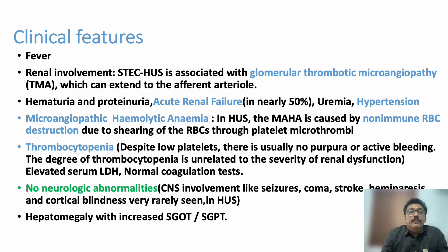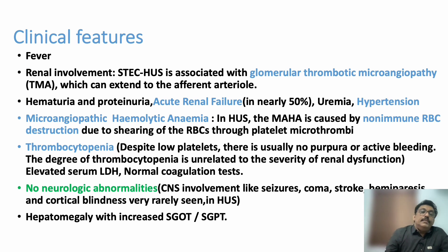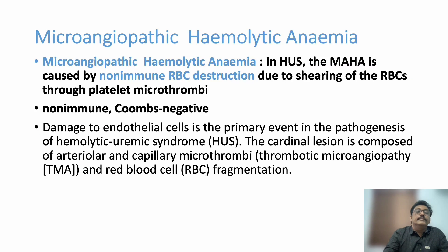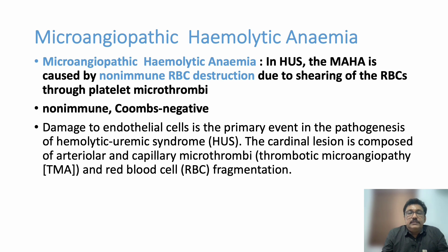Serum LDH and bilirubin can be elevated due to hemolytic anemia. Importantly, coagulation tests are normal in initial HUS. Neurological abnormalities are very rare in HUS but very common in TTP. Hepatomegaly can occur in later stages with SGPT elevation. Microangiopathic hemolytic anemia is a feature of both TTP and HUS, and the Coombs test will be negative since it is non-immune mediated.